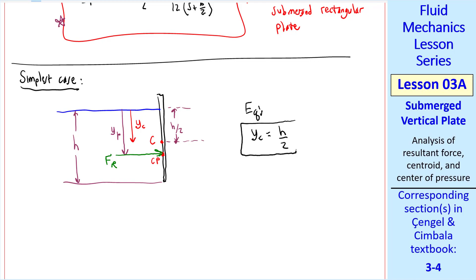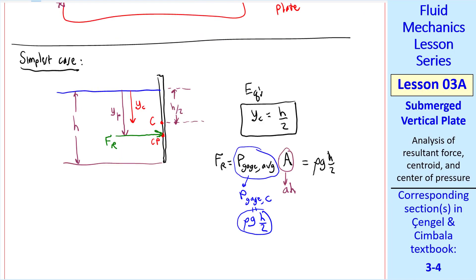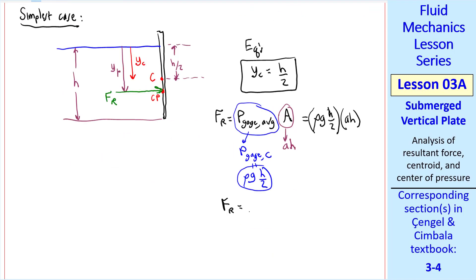Here are some equations then. YC is H over 2. FR is P gauge average times A, where this is the pressure acting at the centroid. And since we're a distance H over 2 down, the gauge pressure is just rho times G times that depth, which is H over 2. The area, of course, is just A times H. So FR is equal to rho G times H over 2 times AH. Or, simplifying, FR, the resultant force, is rho G times A times H squared over 2. Thinking in terms of dimensions, rho G times a length is a pressure, and H squared is an area. So this force is a pressure times an area. So that makes sense.